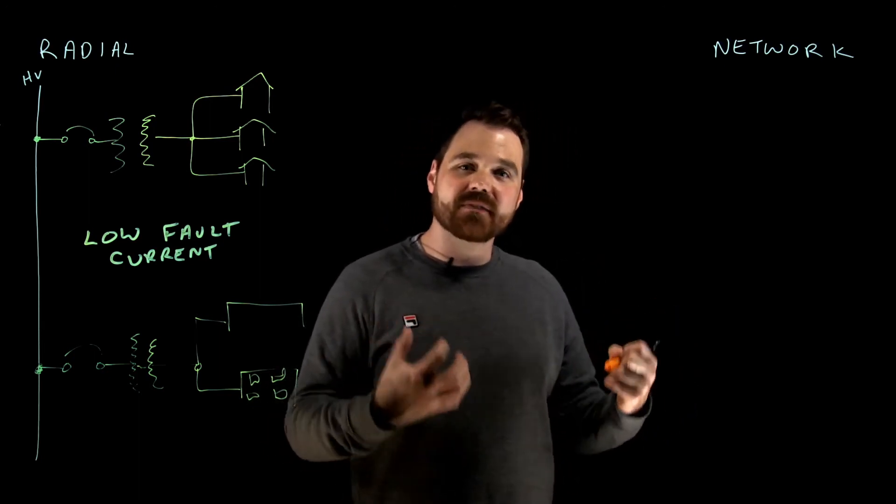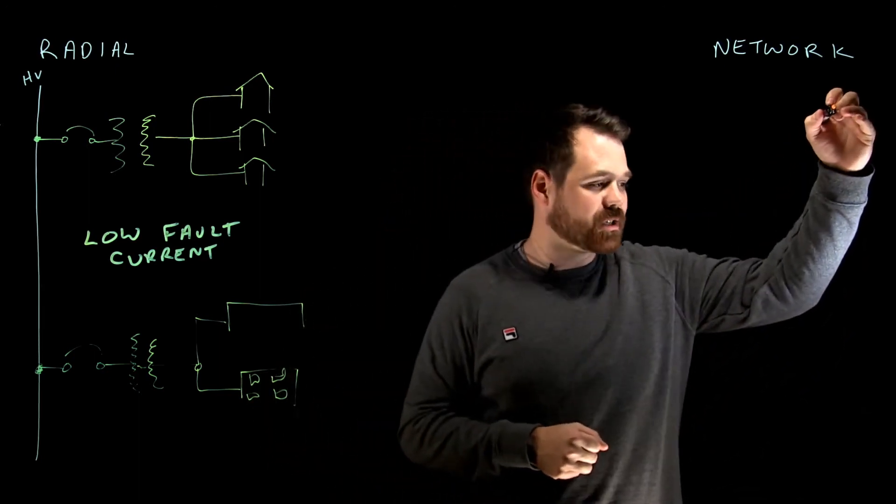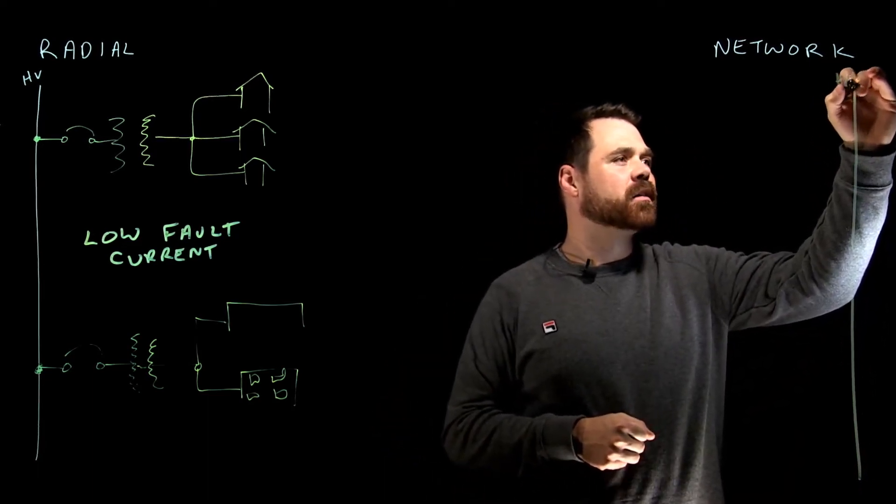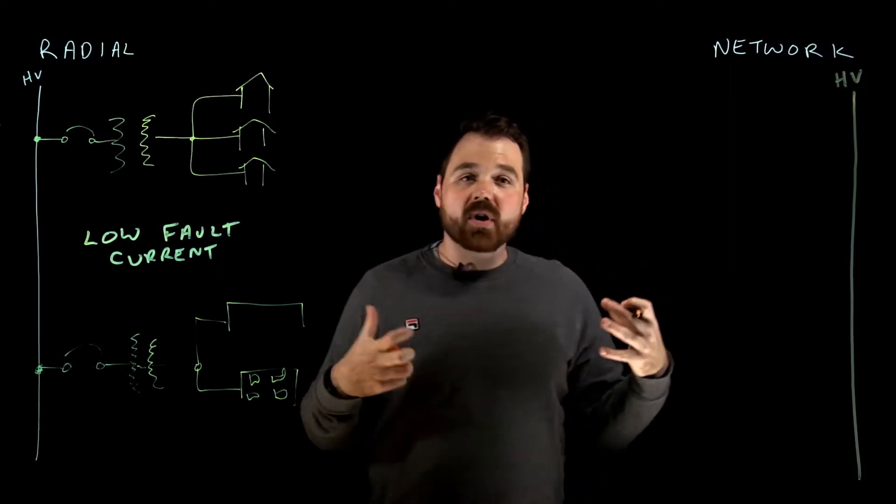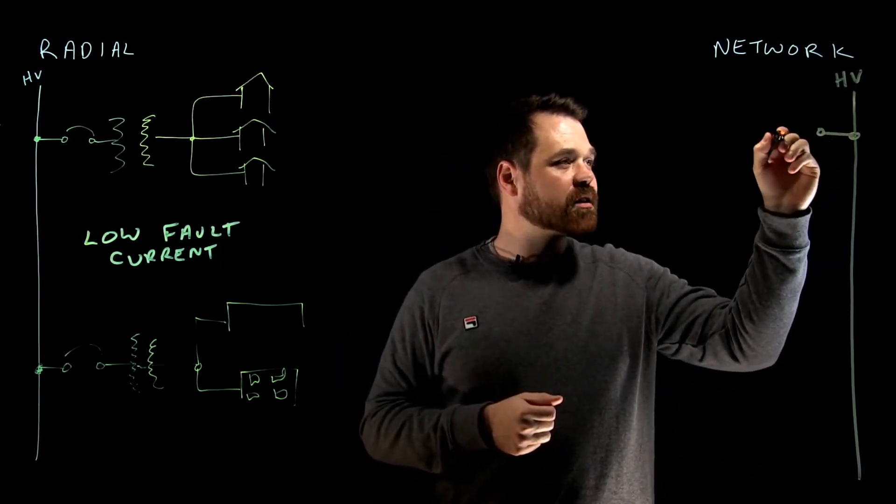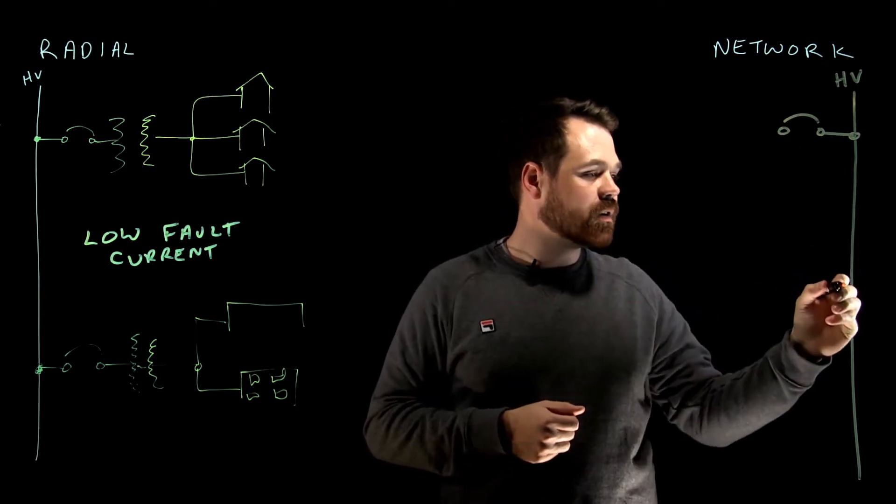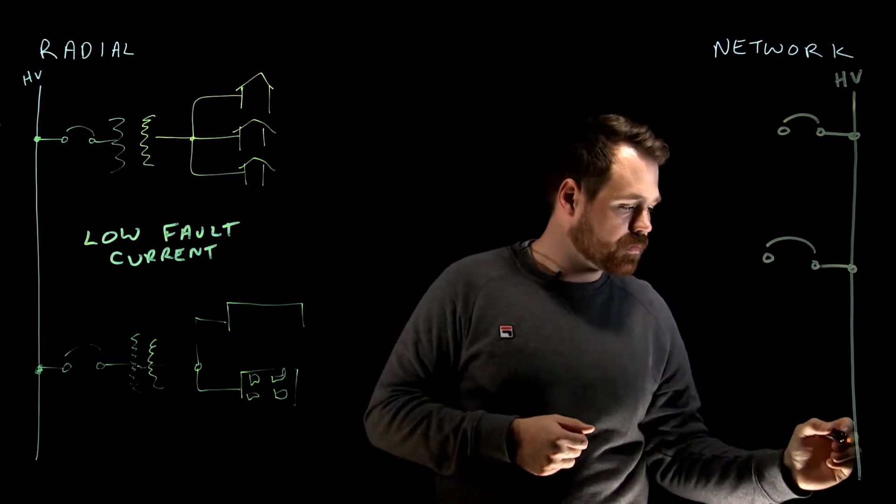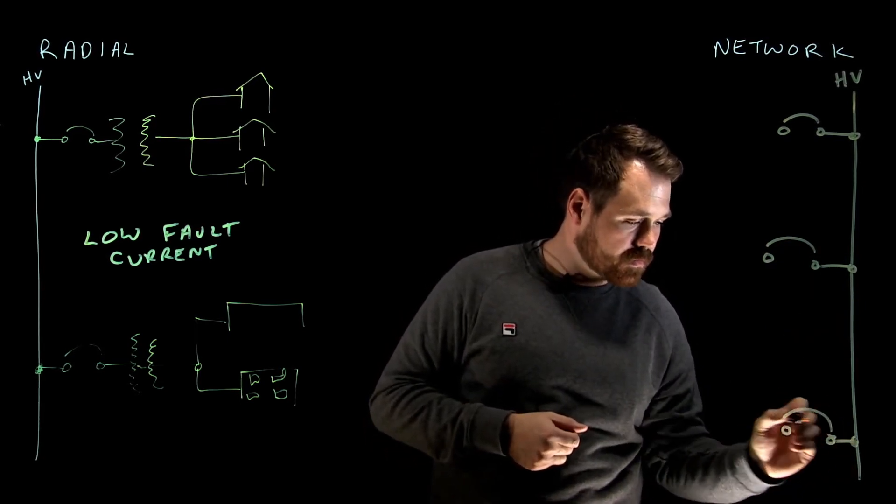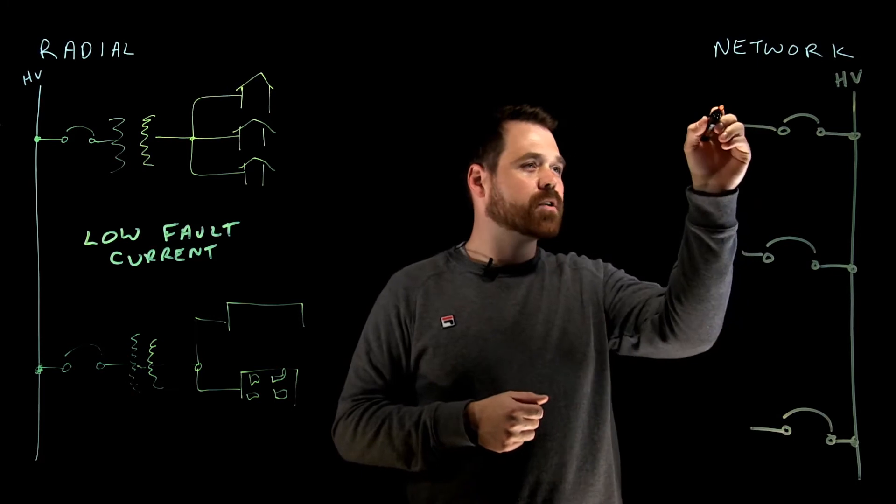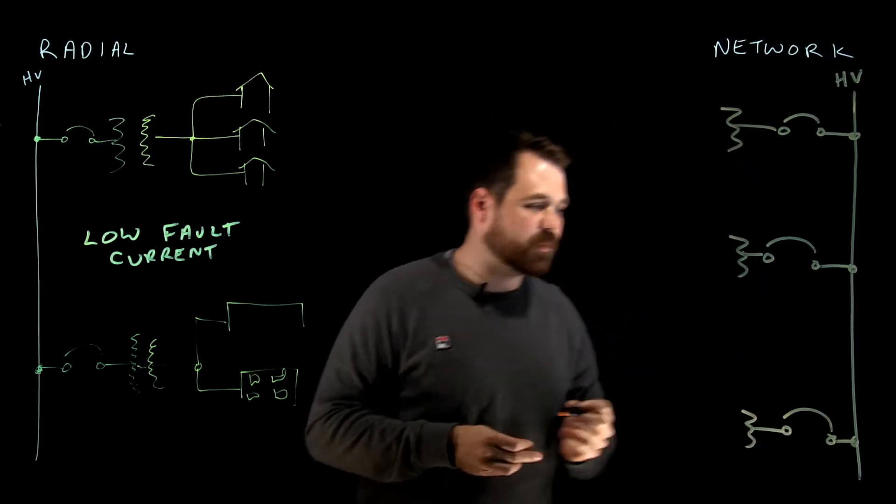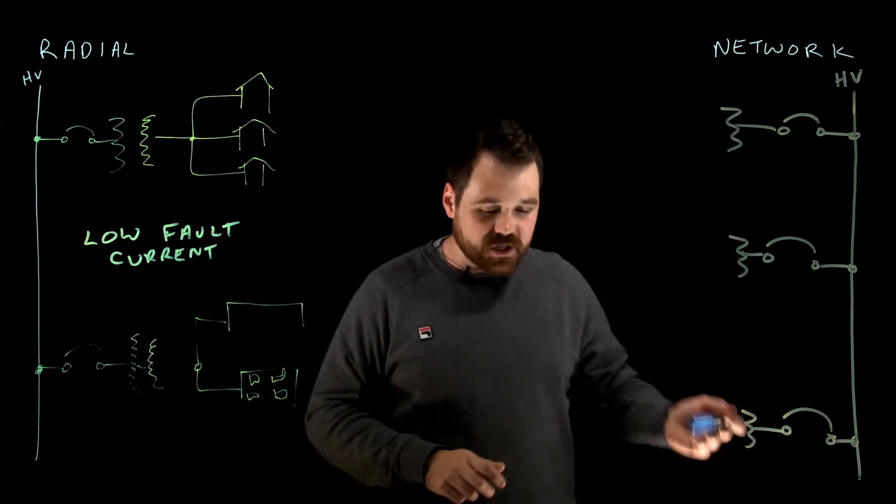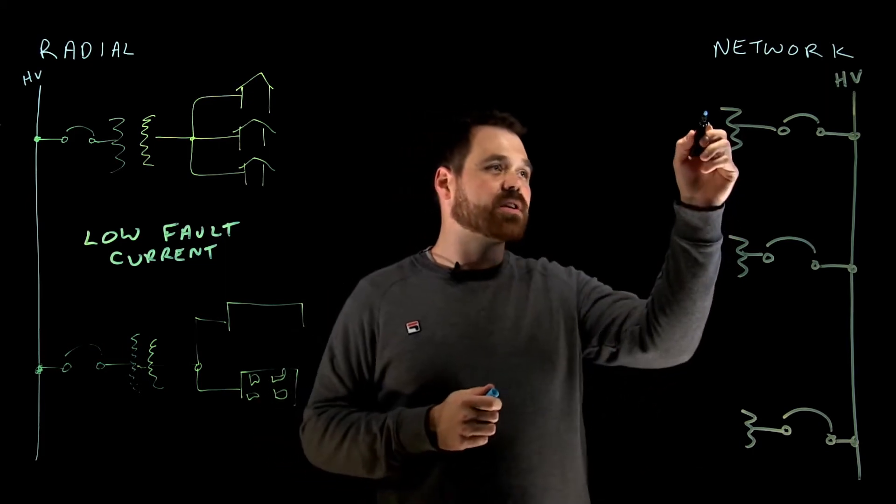Now the network system works a little bit different. So the way the network system works is this could be our high voltage line. Hopping off of our high voltage line, all of the primaries are going to be in parallel. I'm going to do three on this one. All right, so all of our primaries are going to be connected in parallel, just like in the radial system.